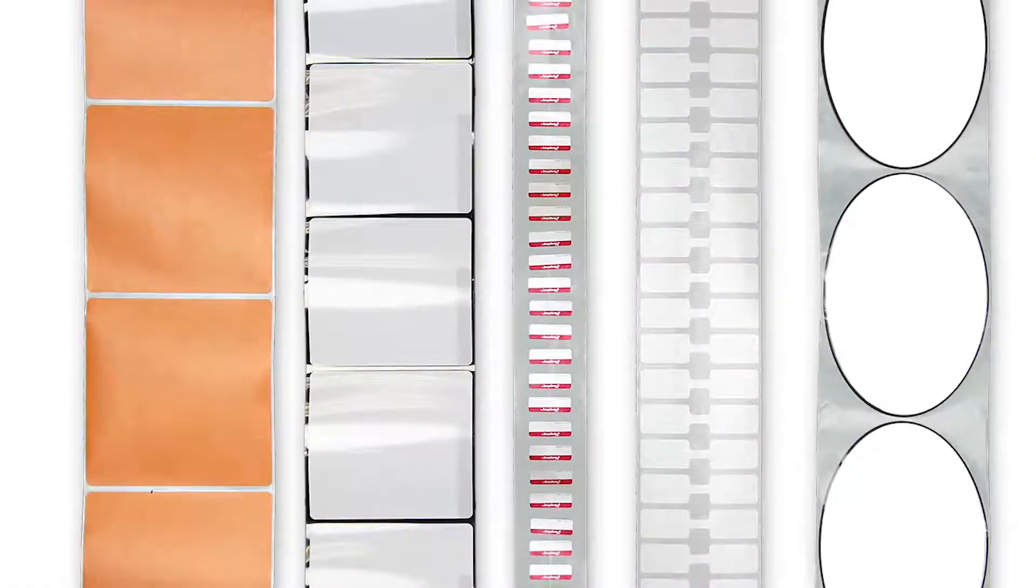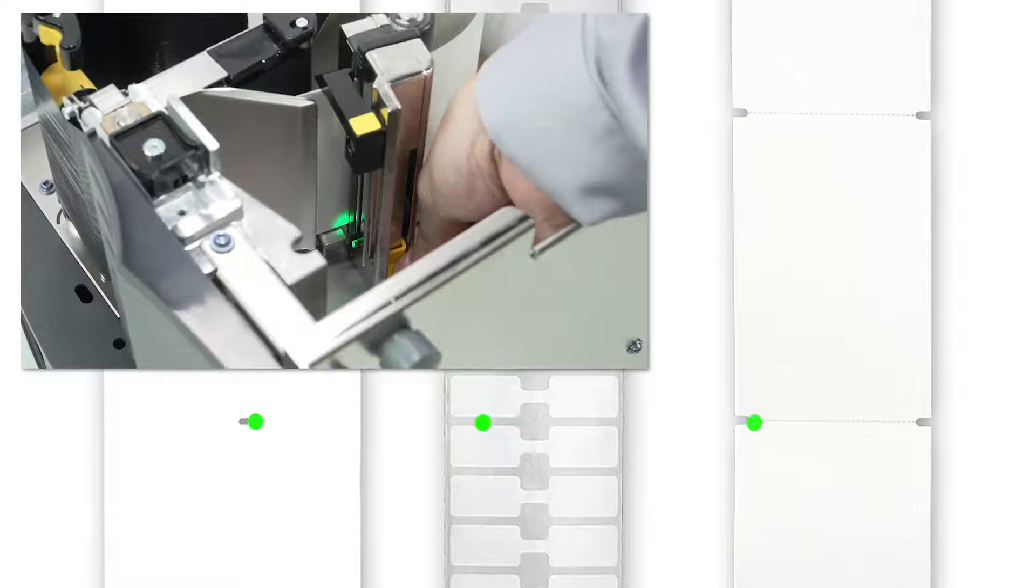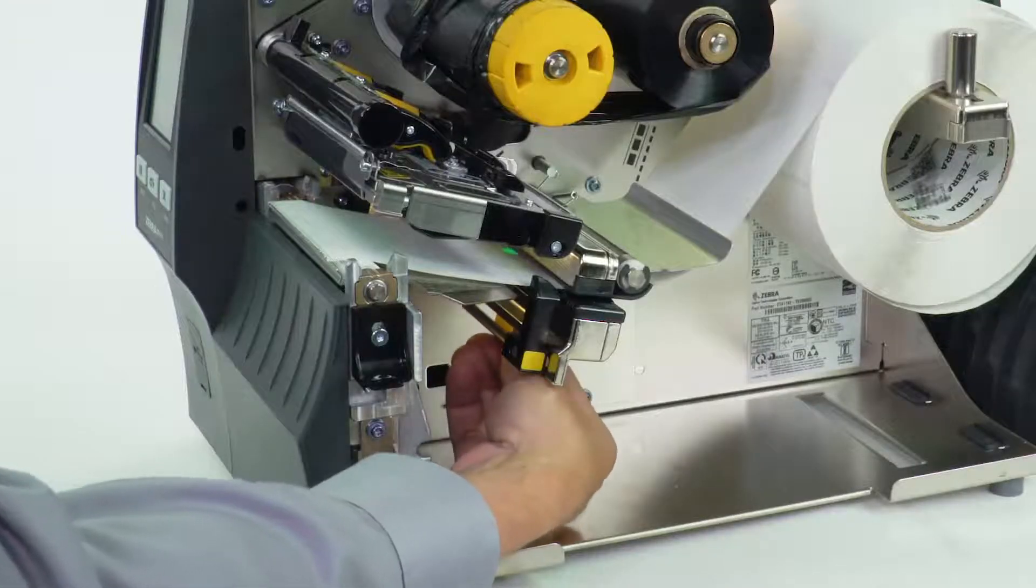If you're using media with a gap, also referred to as web or hole or notch, you want to make sure your sensor is in the optimal position to identify that feature. Move the sensor to a location where the light passes through the notch or hole. Try to avoid locating the sensor under the hole or notch radius.